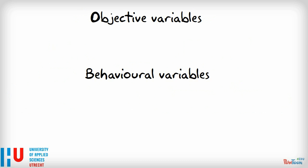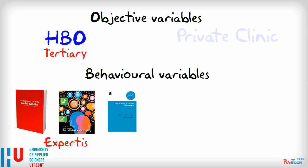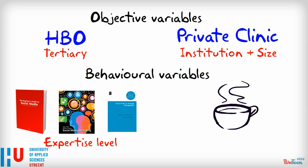For example, the HBO program might have a need for books on marketing at both beginner, intermediate, and advanced levels. A small private hospital might have a need for coffee machines that provide high-quality coffee for patients. Remember, the point of segmentation is to understand the appropriate marketing approach to a segment, through understanding what that segment values.